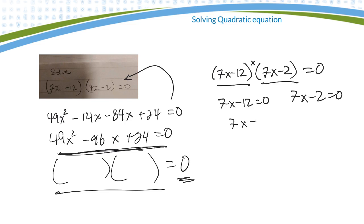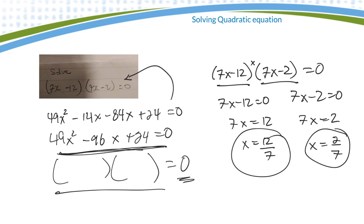I'll add 12 to both sides of this one and divide by 7. On this one, I'll add 2 to both sides and divide by 7. So the two solutions to that equation are 12/7 and 2/7.